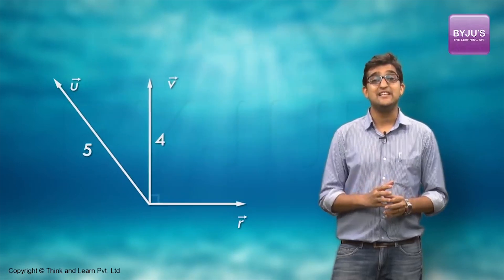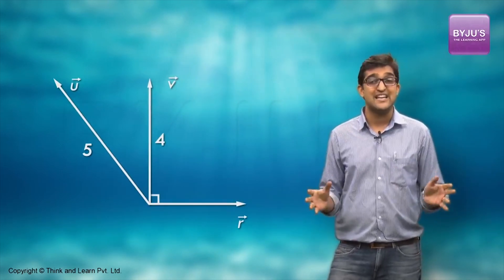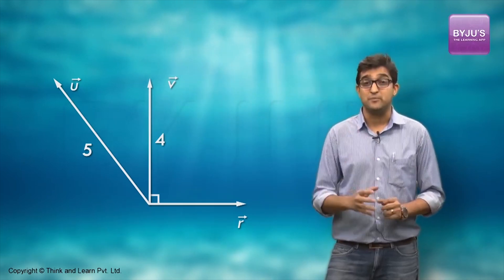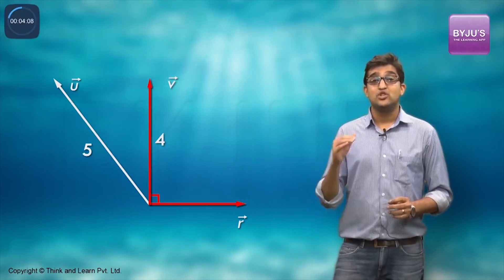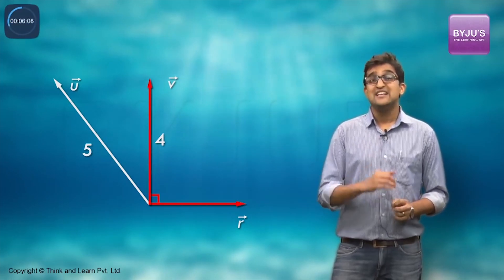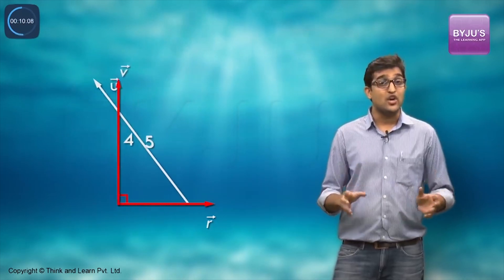The moment you see 90 degrees in the vector figure, you should stop thinking about every other method and just apply Pythagorean triplet. Here, there is a 90 degree between 4 km per hour and the river velocity. So the boat speed in still water, the resultant speed of the boat, and the river speed should be a Pythagorean triplet.